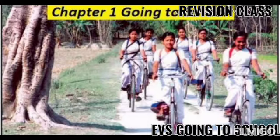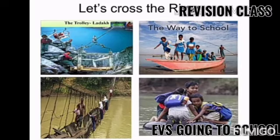First, in Assam, the bamboo bridge is used. Children are crossing the river and reach their schools. Next, we will discuss in Ladakh, which is a trolley in Ladakh, so the children can go from one place to another. We will also discuss the function of pulley here, and we will discuss cement bridge also. Please listen very carefully to this revision class and note down the points.